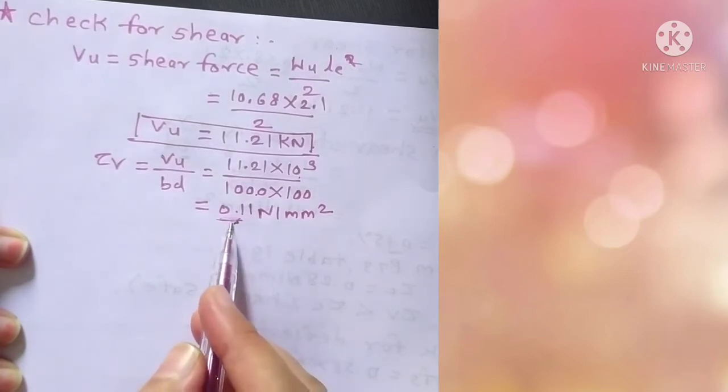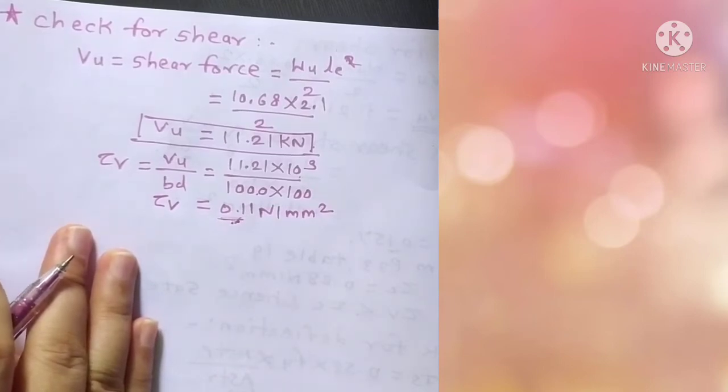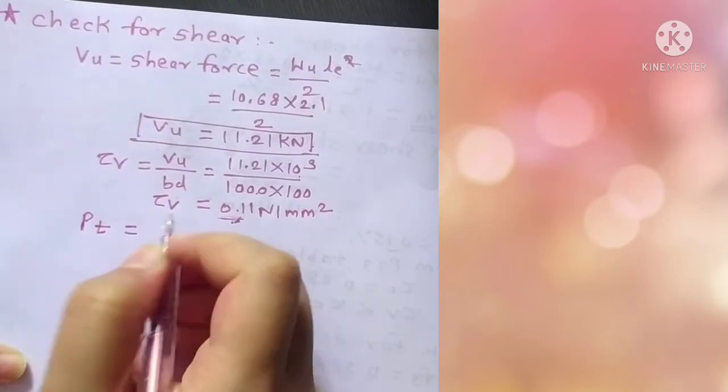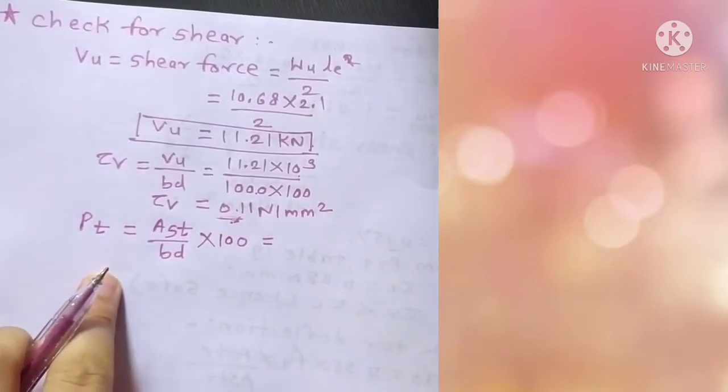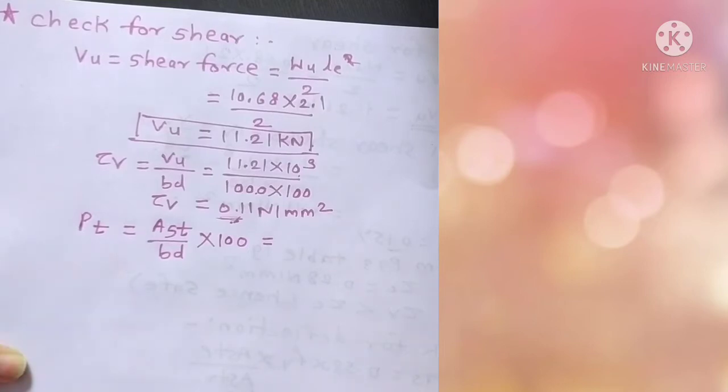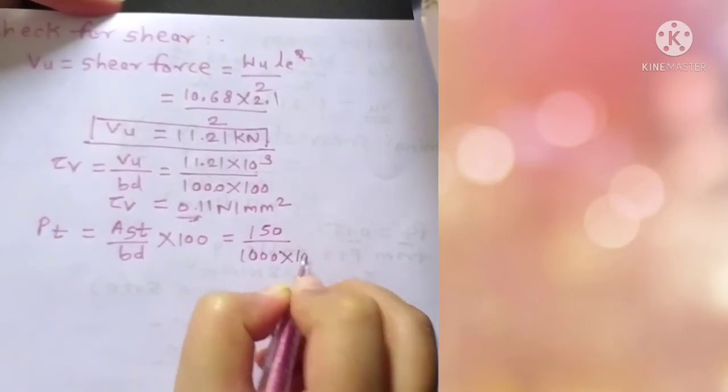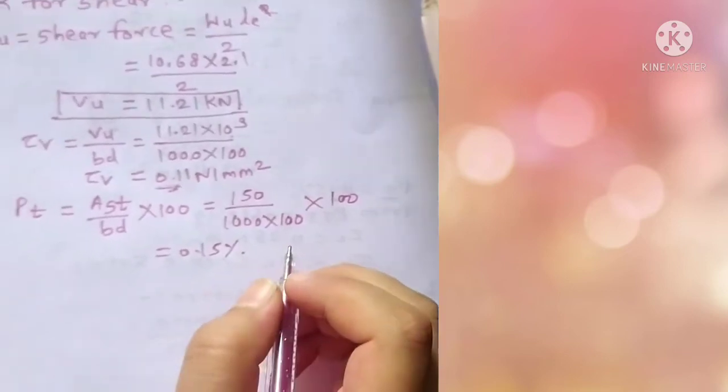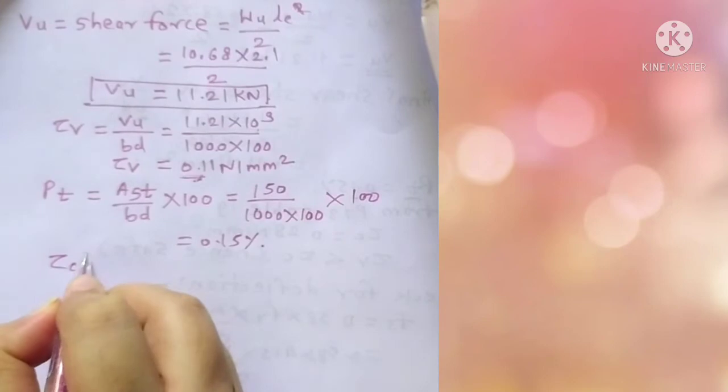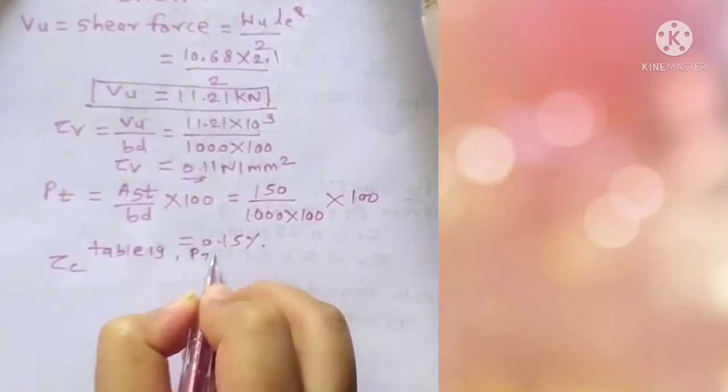This Tau V, which is nominal shear stress, we need to compare with Tau C, which is permissible shear stress. Permissible shear stress given by IS456 depends upon the percentage of steel. Percentage of steel we are going to calculate by formula Pt equals AST divided by BD into 100, which we are going to consider for the distribution steel.